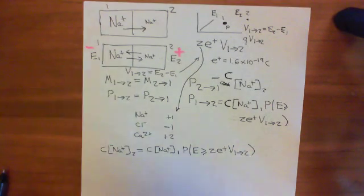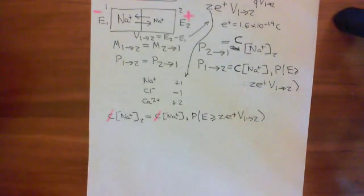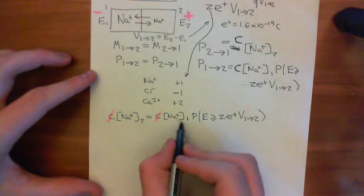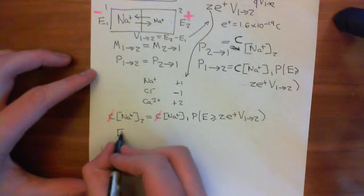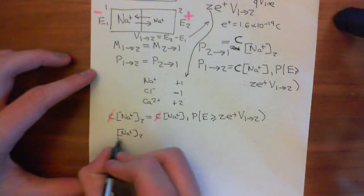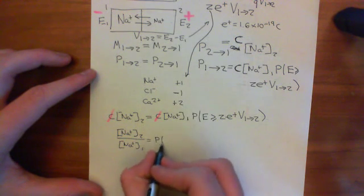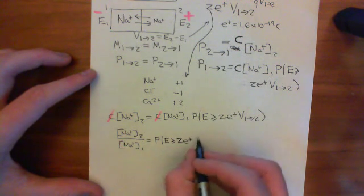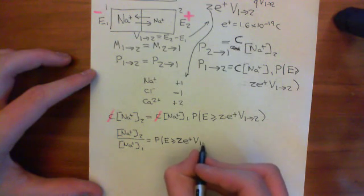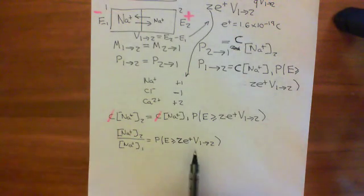We can instantly cancel off this constant that we didn't know — so that's lucky, because we didn't know what the value of that was. We can then move the sodium concentration of compartment 1 onto the other side. So we get that the sodium concentration in compartment 2 over the sodium concentration in compartment 1 is equal to the probability that the energy of the particle is greater than or equal to Z times the charge on the proton times the voltage from compartment 1 to compartment 2. That voltage from compartment 1 to compartment 2 is what we're after — that is the equilibrium voltage.